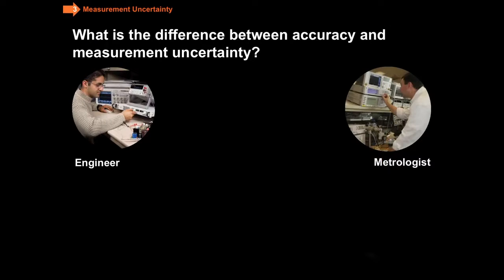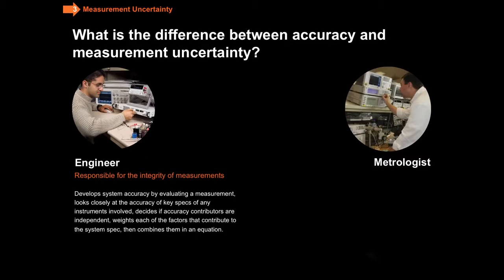What I'd like to do is just quickly draw a distinction between accuracy and measurement uncertainty. Let's take a look at how does a metrologist versus an engineer examine the accuracy of a measurement. So an engineer who's responsible for measurements will develop a system accuracy by evaluating a measurement. They're going to look closely at the accuracy of any key specs that matter, decide if those individual error contributors are independent, and come up with some way of weighting each of the factors and combining them into an equation in an appropriate fashion.